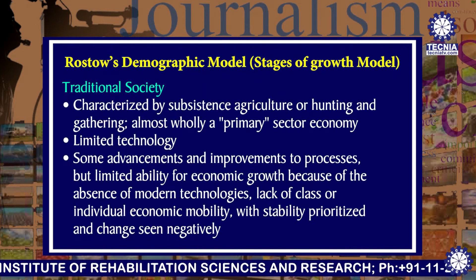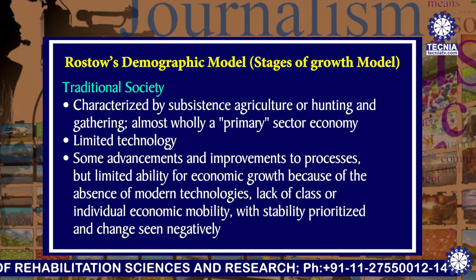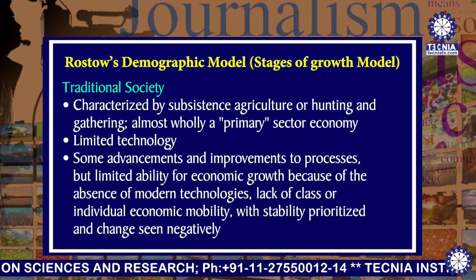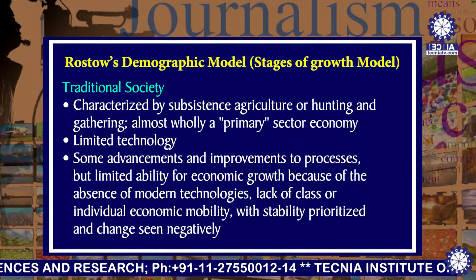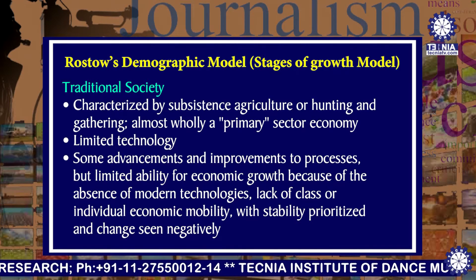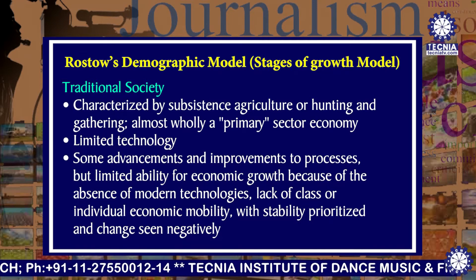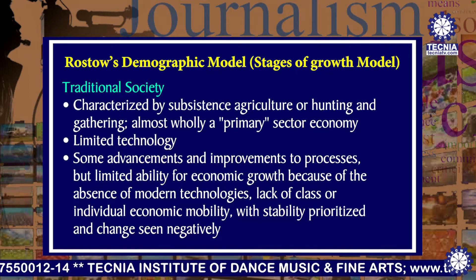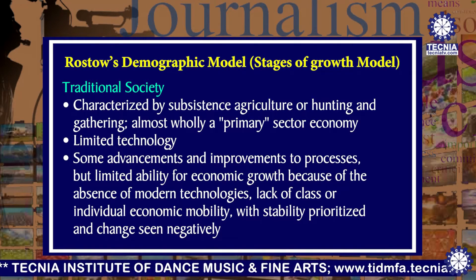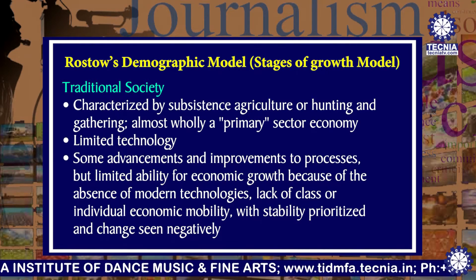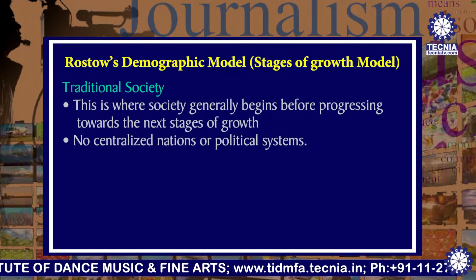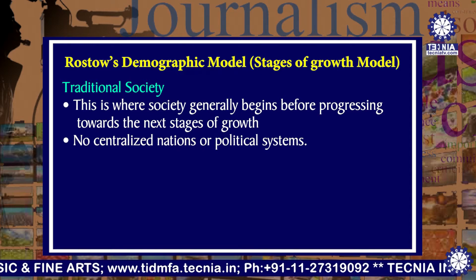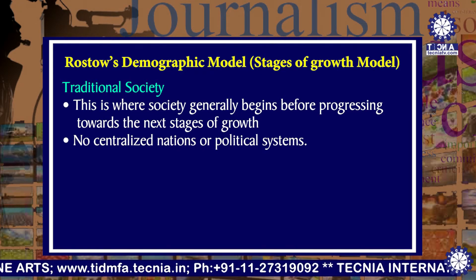Traditional society is characterized by subsistence agriculture, or hunting and gathering — almost wholly a primary sector economy. Limited technology, some advancements and improvement to processes, but limited ability for economic growth because of the absence of modern technologies, lack of class or individual economic mobility, with stability prioritized and change seen negatively. This is where society generally begins before progressing towards the next stage of growth. No centralized nations or political systems.